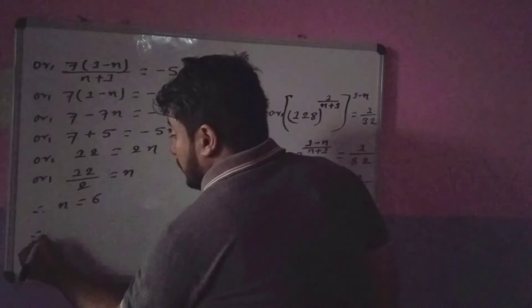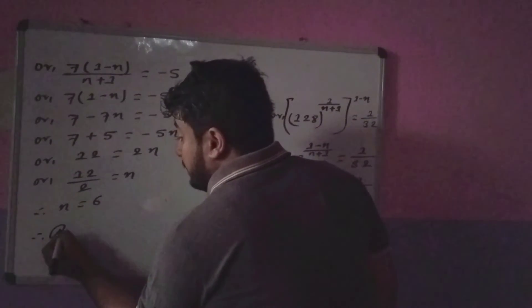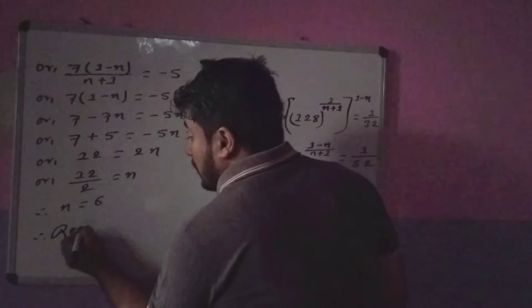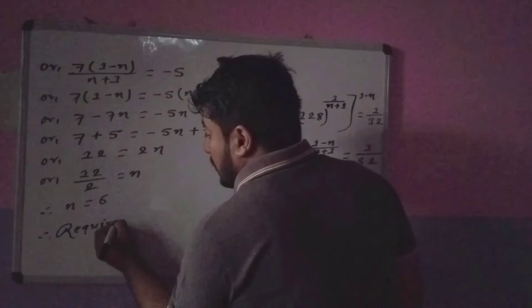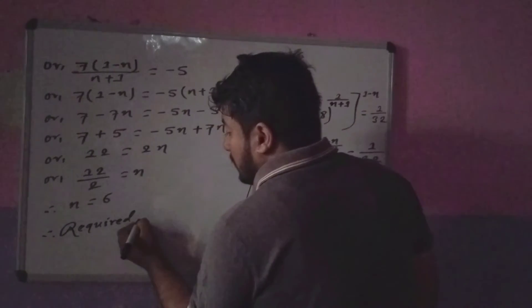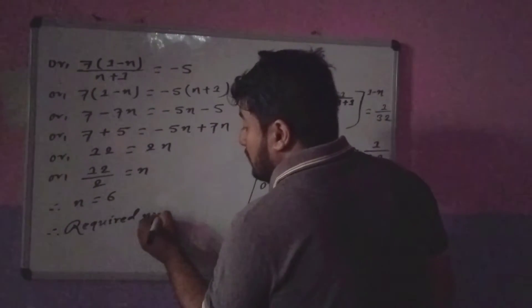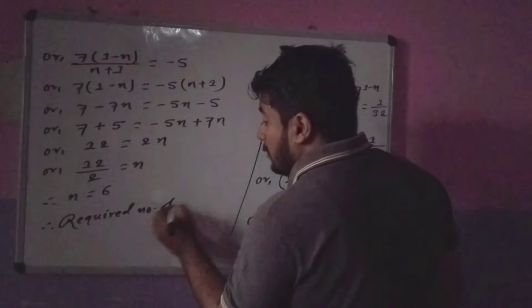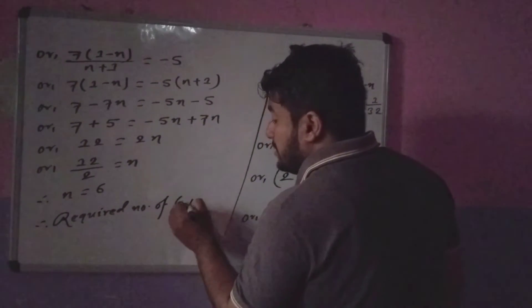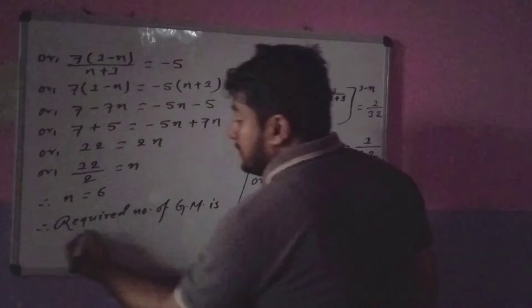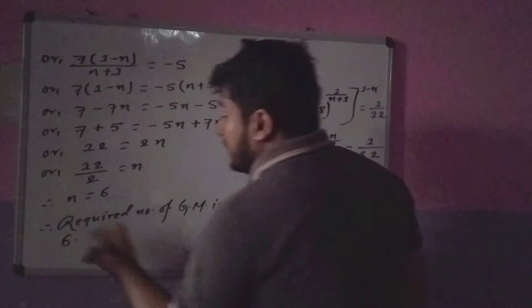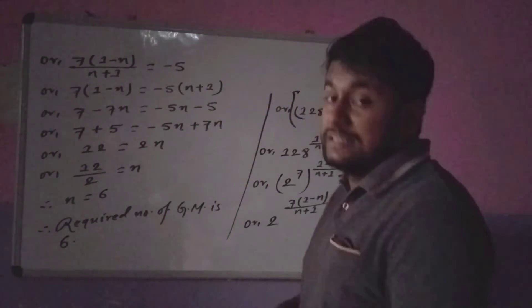Therefore, the required number of geometric means is 6. That is the answer.